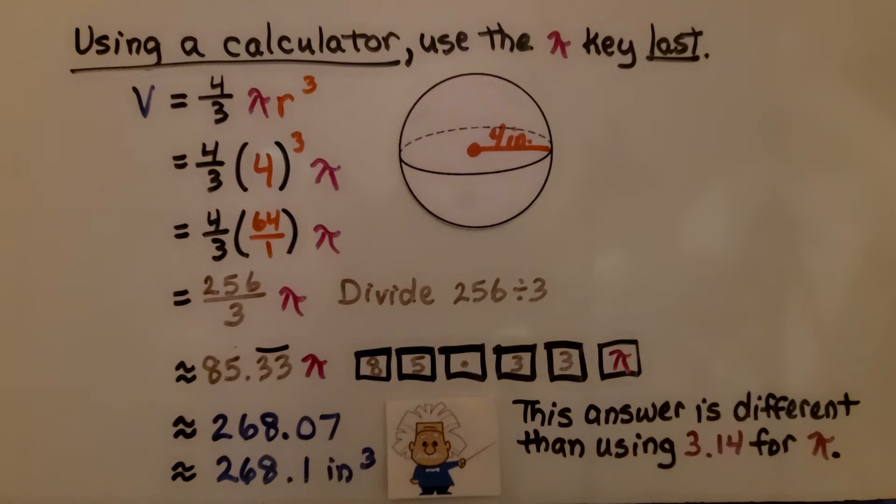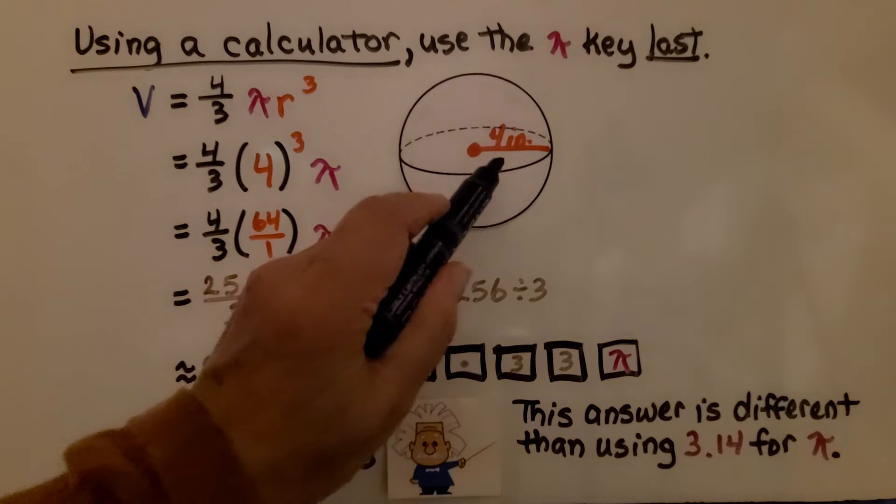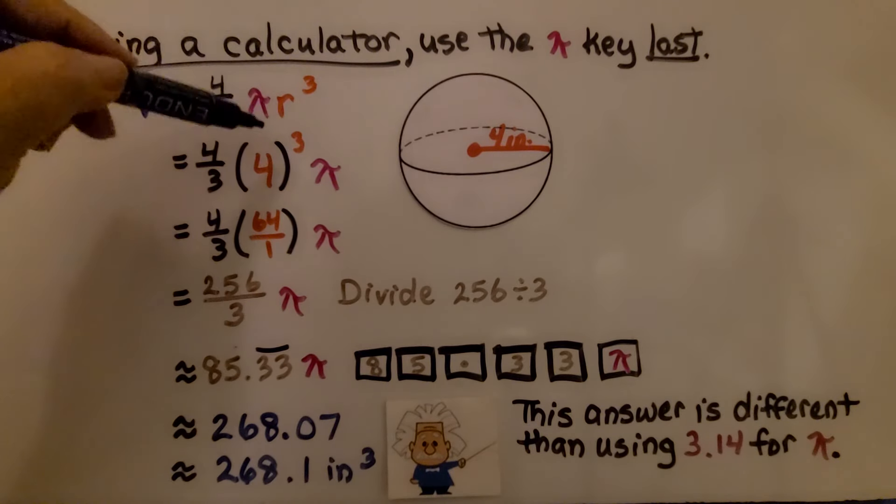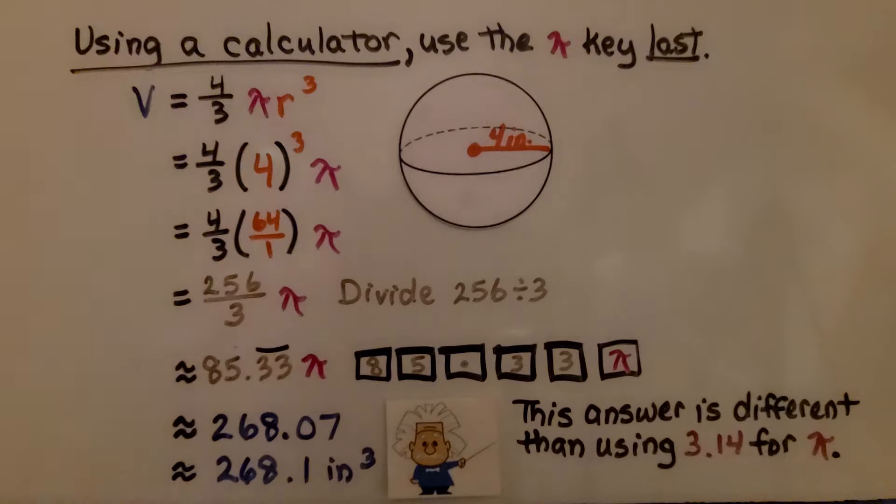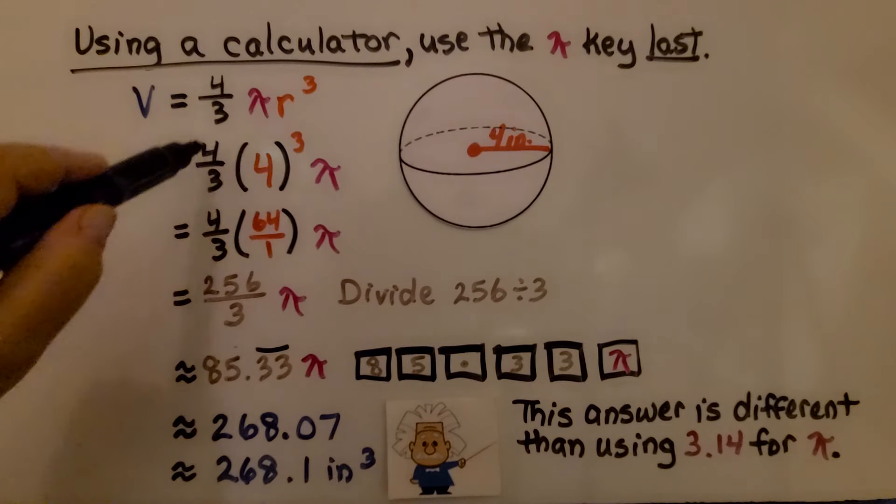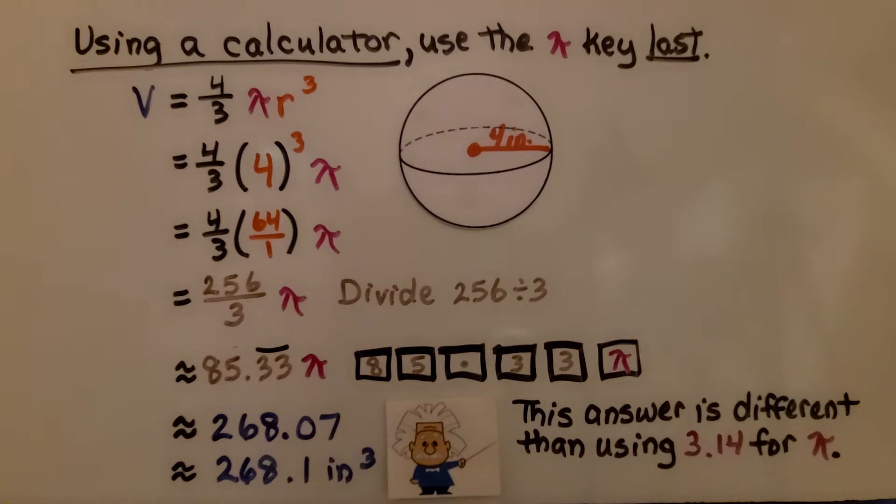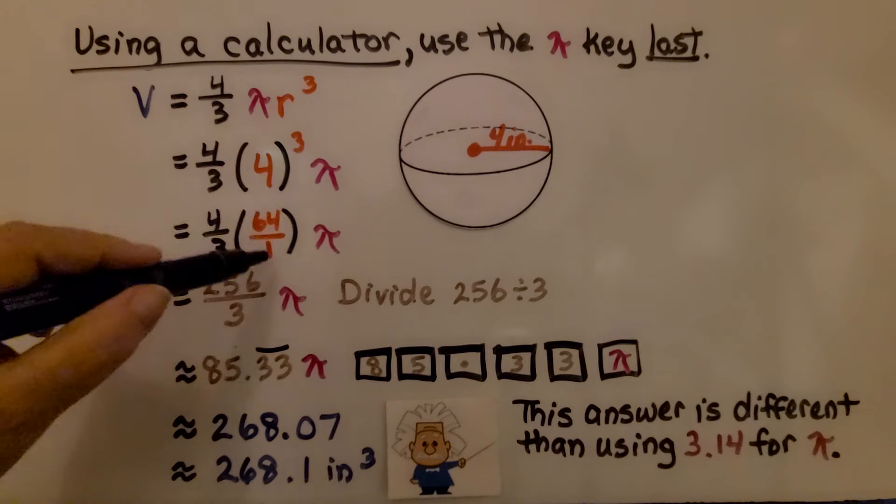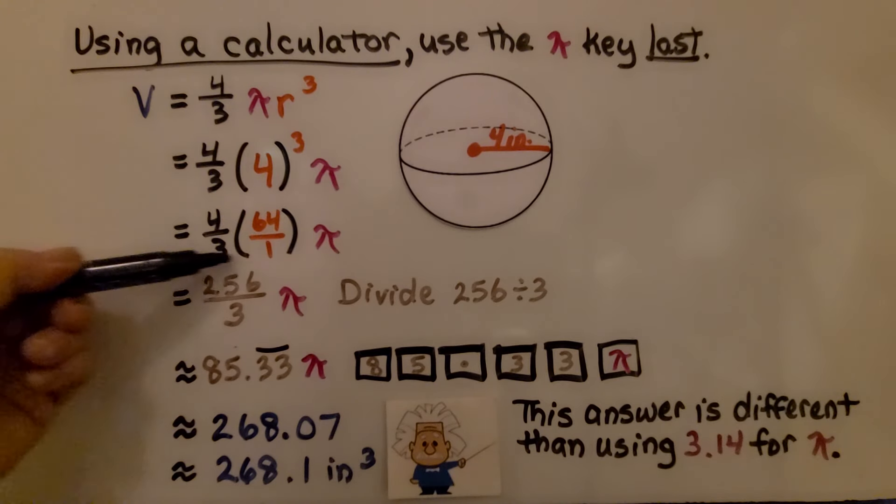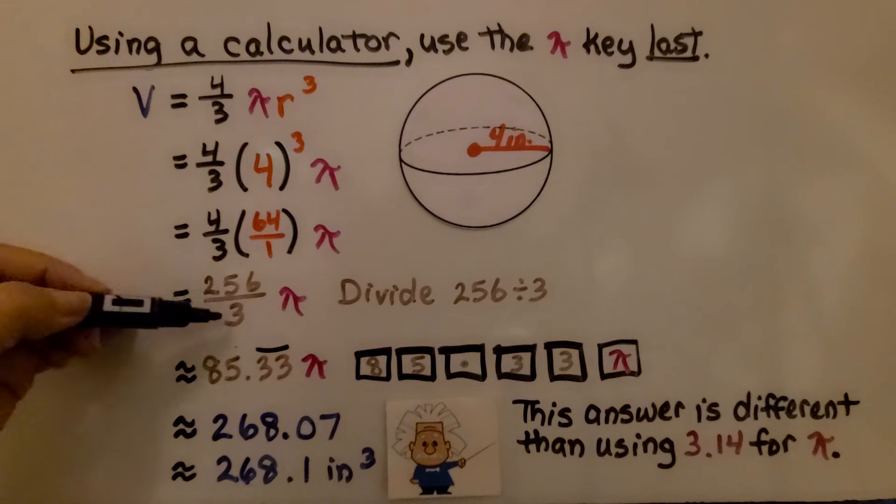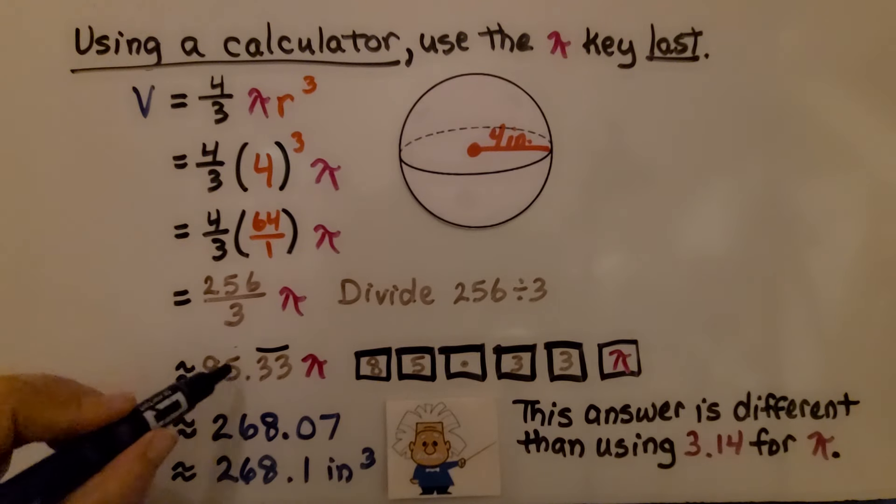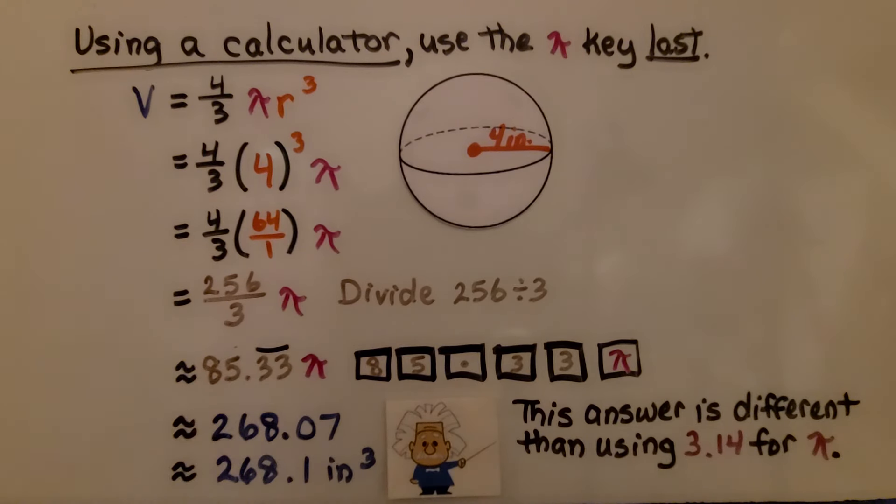Using a calculator, we would use the pi key last. We can see it's telling us that the radius is 4 inches, so for the radius we put 4 cubed. Because we're going to use the pi key last, we can move it over by the 4 thirds and put the pi at the end. We do 4 times 4 times 4, which is 64. We can write it as a fraction over 1, so we can multiply straight across and we get 256 thirds. On your calculator, you can divide 256 divided by 3. We're going to get approximately 85.33. The 3 will start repeating.